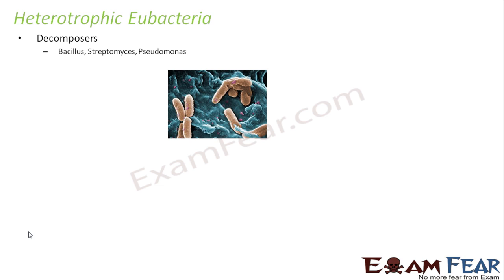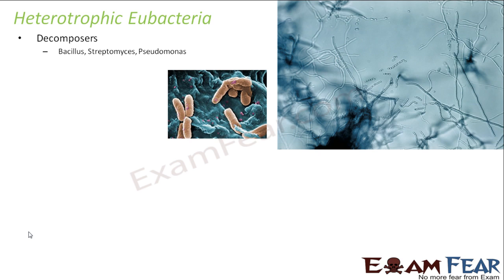Heterotrophic eubacteria act as important decomposers — they feed on dead and decomposed matter and thereby help in decomposing dead organisms. Examples are Bacillus, Streptomyces, and Pseudomonas. These are all examples of heterotrophic eubacteria which act as decomposers.